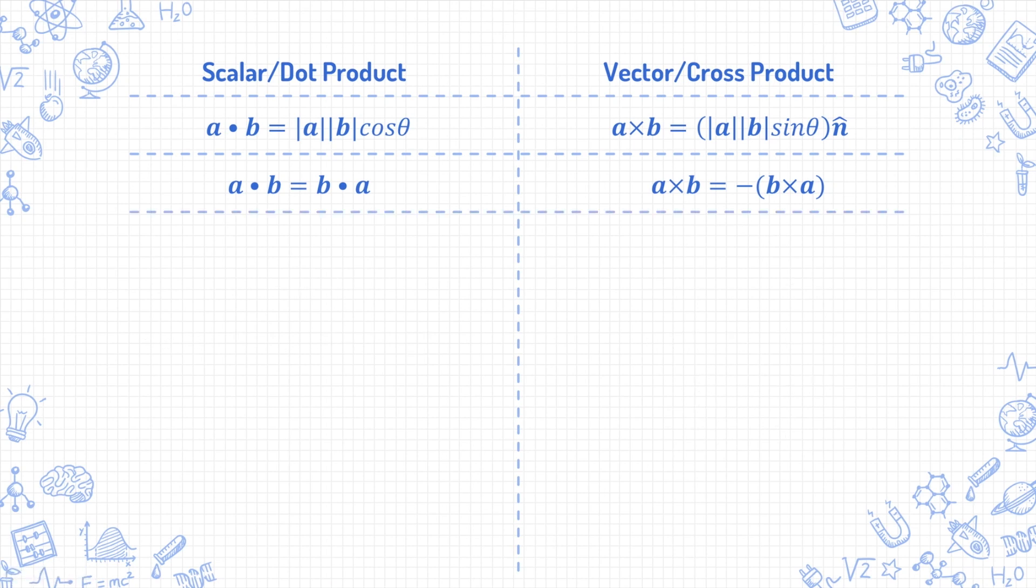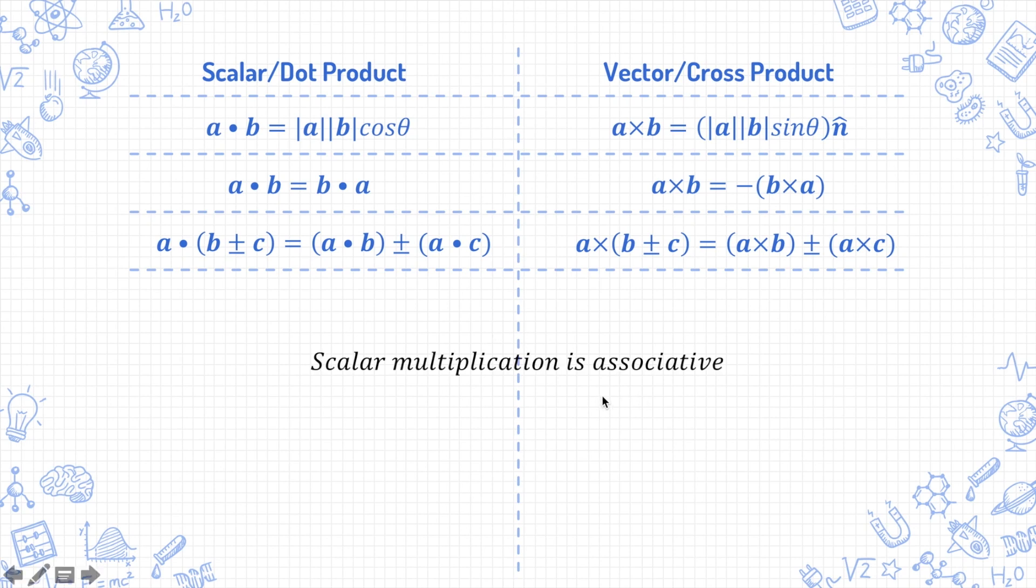Next, both the dot product and cross products are distributive over addition. So, a dot bracket b plus minus c is equal to a dot b plus minus a dot c. And a cross b plus minus c equals a cross b plus minus a cross c. For both the dot products and cross products, scalar multiplication is also associative, which means that lambda times a dot b equals lambda a dot b equals a dot lambda b for any real number lambda.